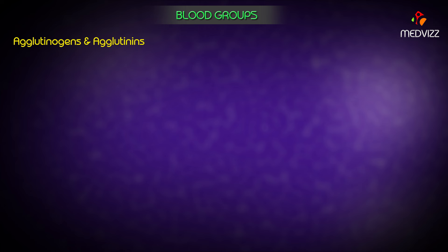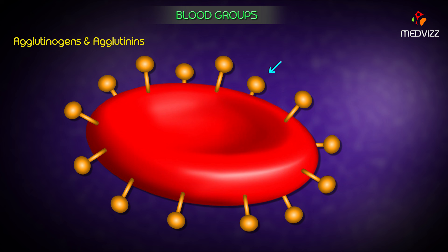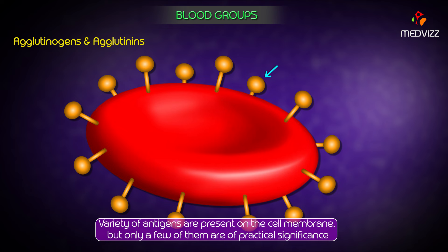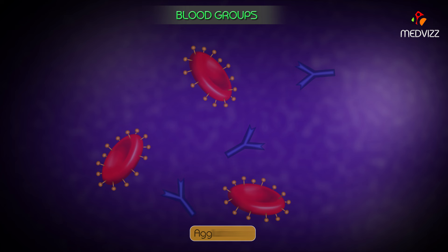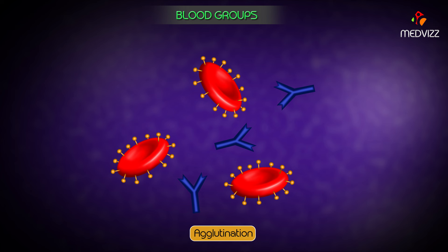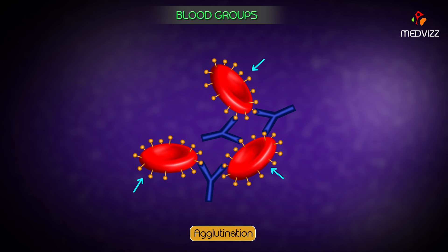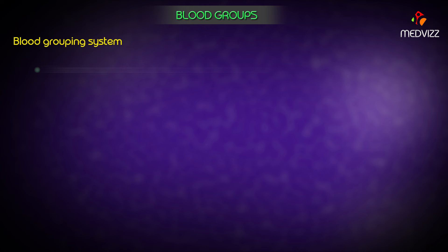Blood groups: agglutinogens and agglutinins. Agglutinogens refer to the antigens present on the cell membrane of RBCs. Agglutinins refer to the antibodies against the agglutinogens and are present in the plasma. Agglutination of RBCs can be caused by the antigens present on their cell membranes in the presence of suitable agglutinins, which is why these antigens are called agglutinogens.